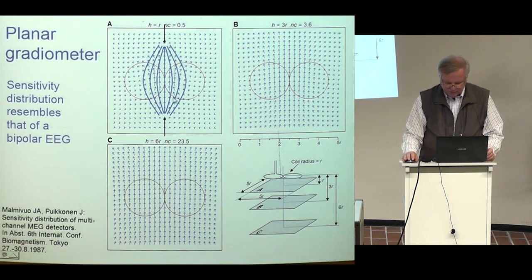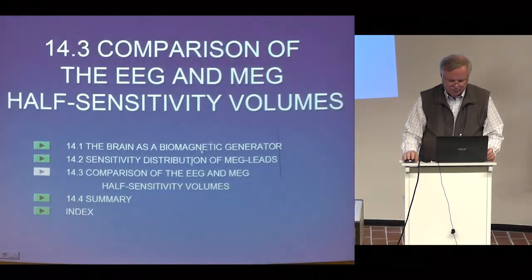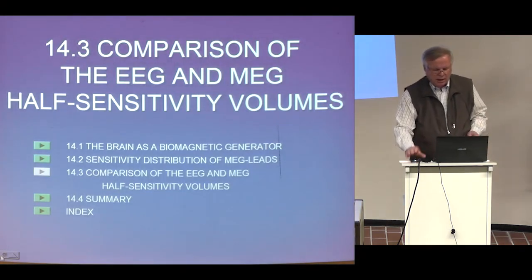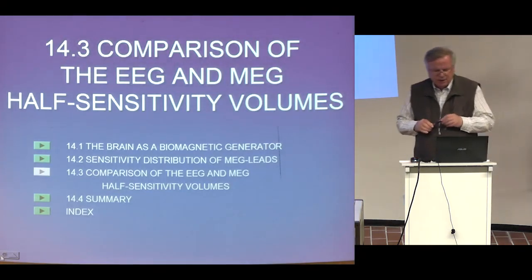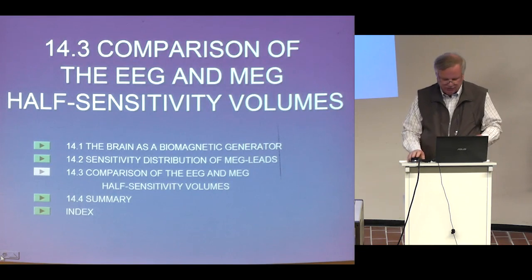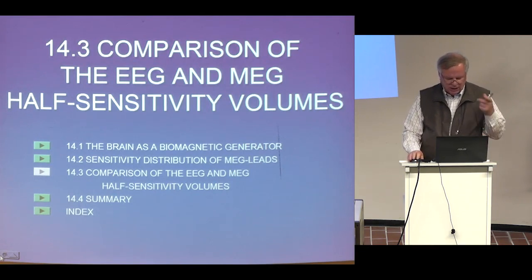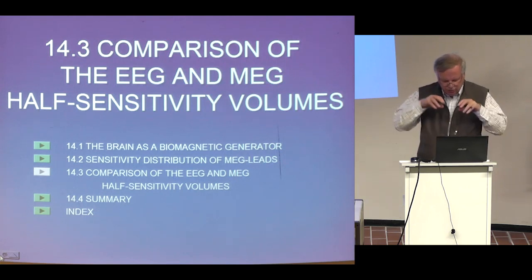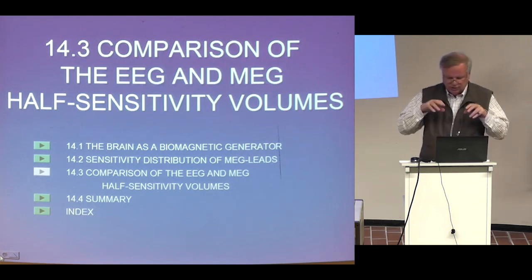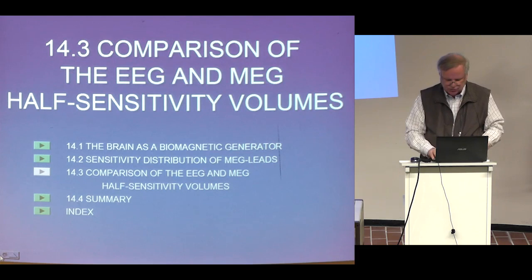For comparison, we may place a pair of EEG electrodes and find that the measurement sensitivity is quite similar with those electrodes as with the planar gradiometer. So what is the difference? That's the point. I compare these EEG and MEG half sensitivity volumes — the ability of these methods to focus the sensitivity, i.e., their spatial resolution.